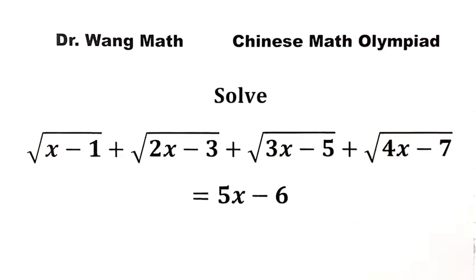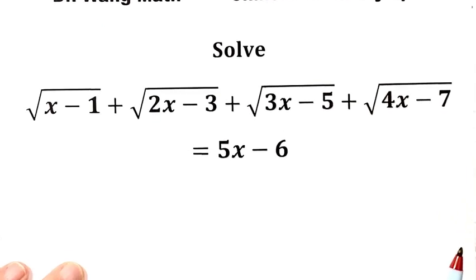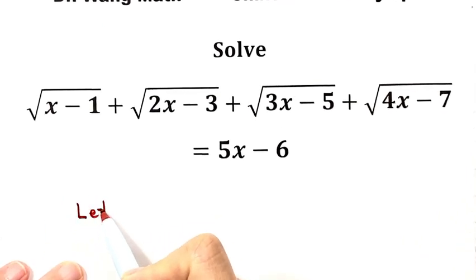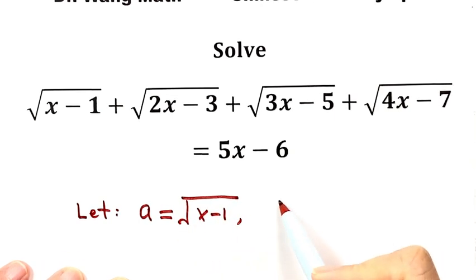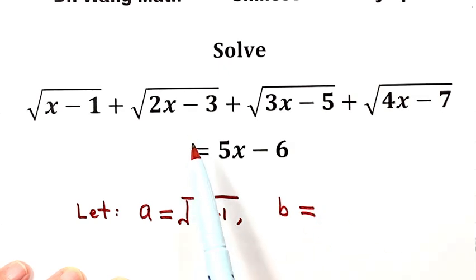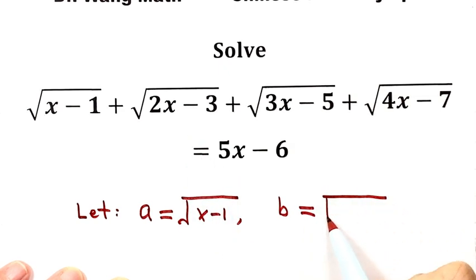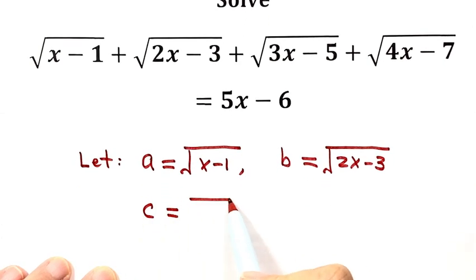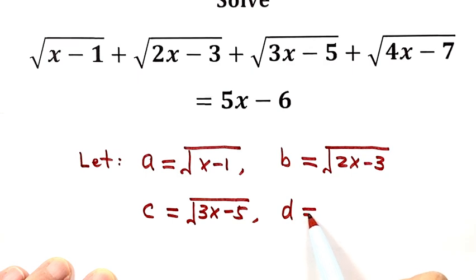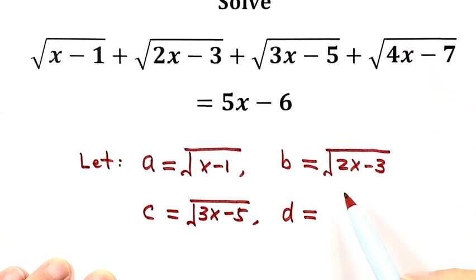The first step, we'll define several variables. First, we're going to define a equals the first square root: square root of (x minus 1). Then let b equal the second square root: square root of (2x minus 3). Then let c equal square root of (3x minus 5). Then let d equal square root of (4x minus 7).